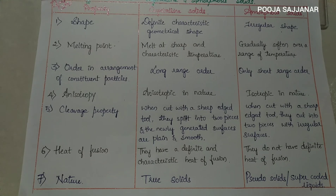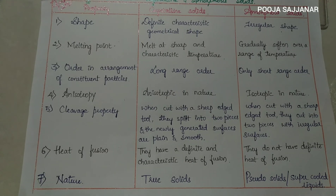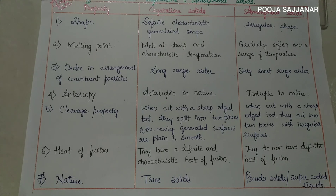On the nature of amorphous solids, you may get one applied question: why are glass panes fixed to windows or doors of old buildings found to be slightly thicker at the bottom than at the top? This is because glass, being an amorphous solid, has a tendency to flow. Therefore, it flows down very slowly and makes the bottom portion slightly thicker.